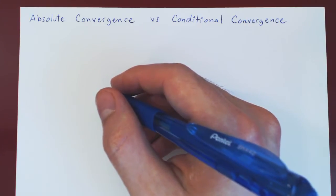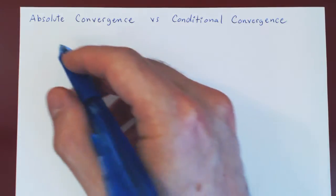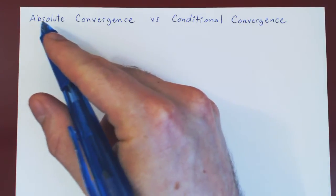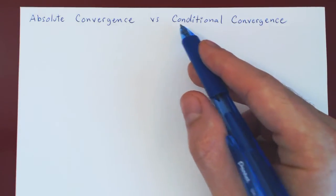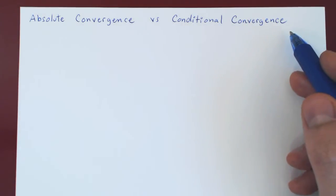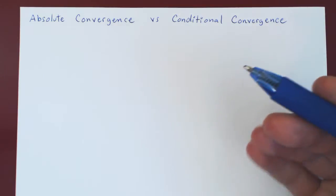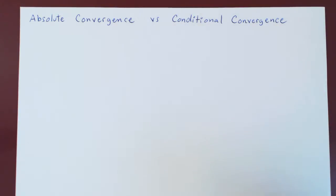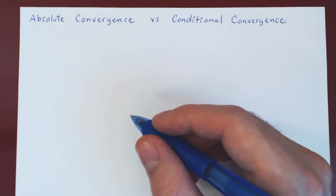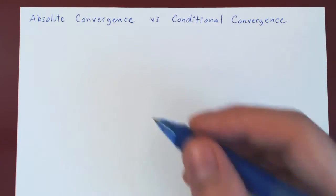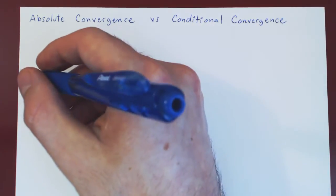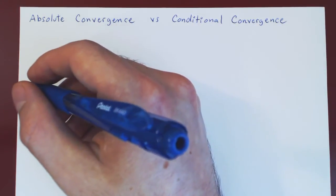In this video we want to look at two different types of convergence, namely absolute convergence and conditional convergence. We'll look at this from the point of view of constructing a simple tree as to what can happen about the convergence of a series, and we'll look at different possibilities.